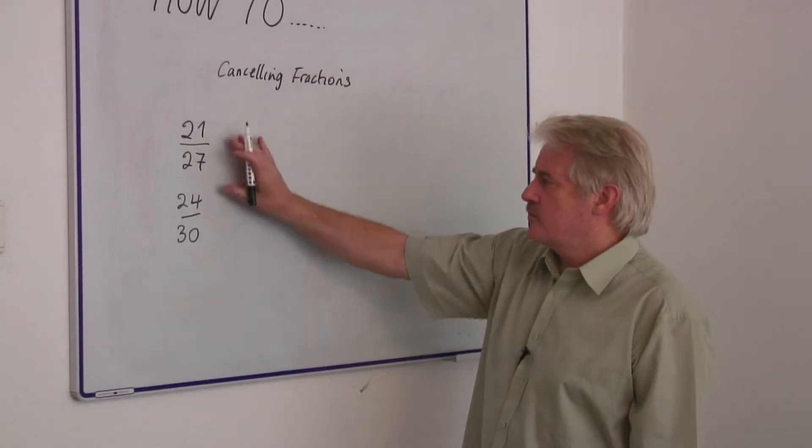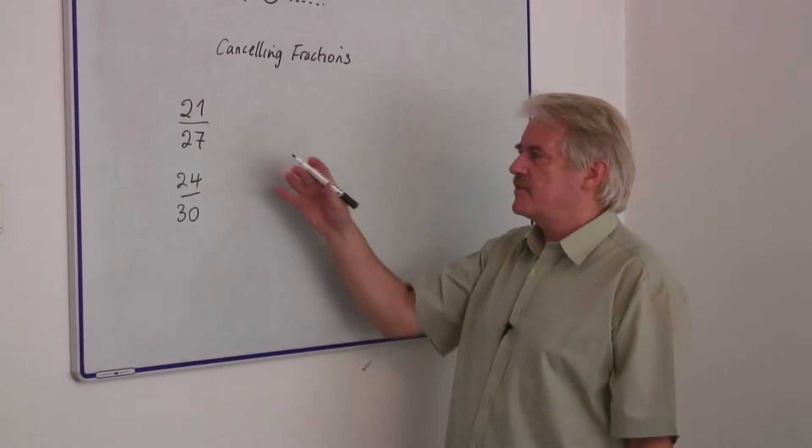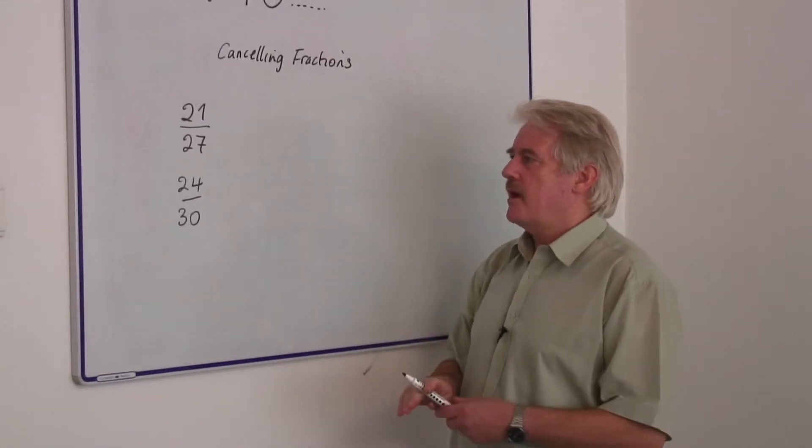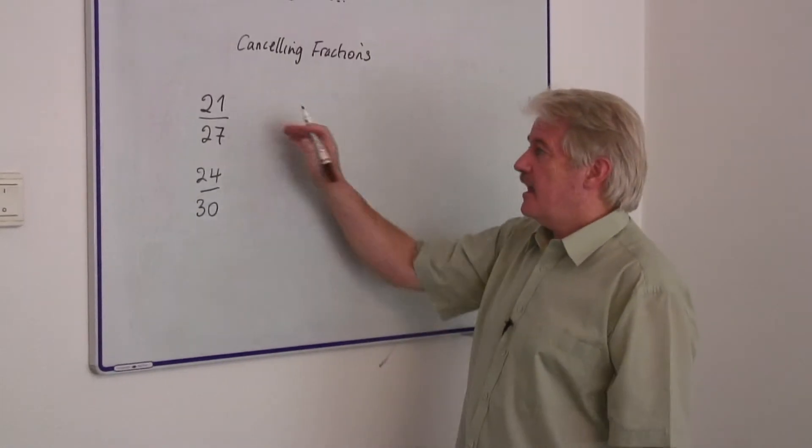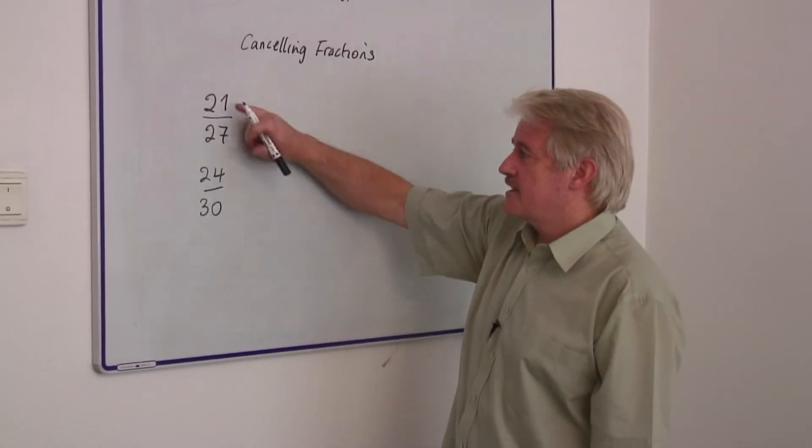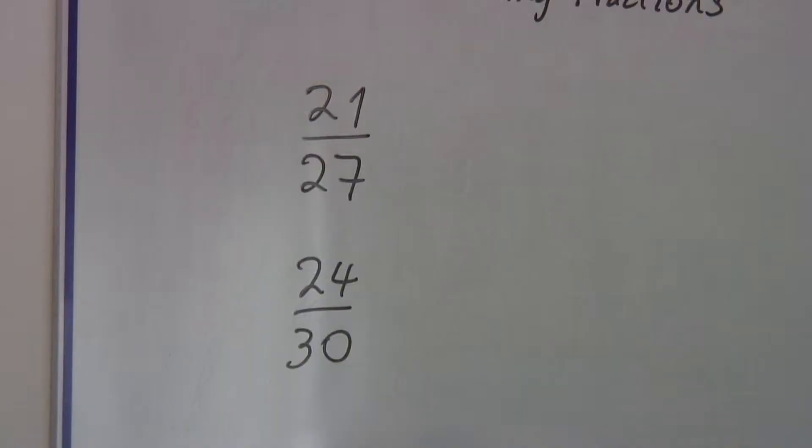If I want to cancel two fractions, what I've got to do is inspect them first and see if there's anything obvious about how I can cancel them down. Cancelling means looking for the same number in the top and the bottom and then dividing top and bottom by that number.